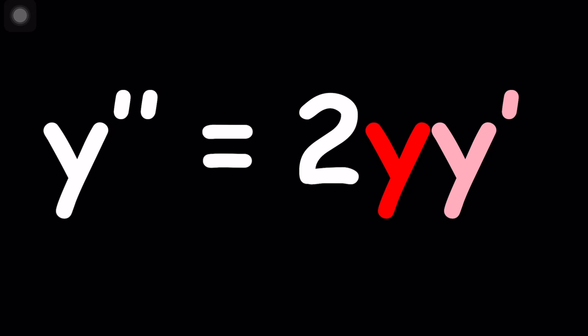First of all, there's one thing that I want you to notice. Notice that y double prime is the second derivative, which is the derivative of the first derivative. In other words, y double prime can be written as y prime prime. That's why it's called double prime. Every prime means you're differentiating once.